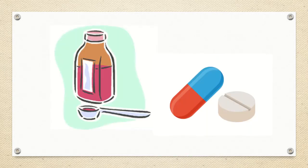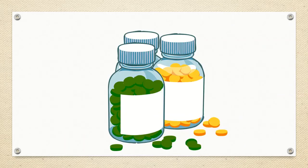Medicines come in different types. Some come in liquid form and some in tablets and pills. These medicines also have different flavors — some medicines are sweet and some are bitter.